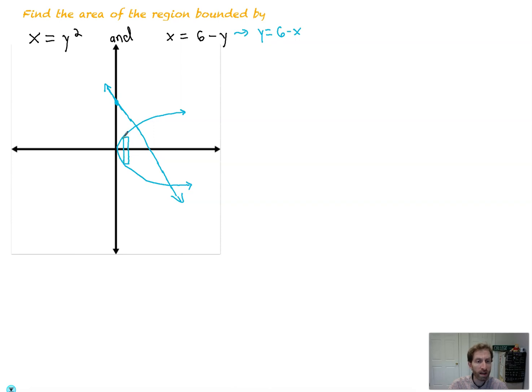But then when you get to this point, you'd have a top curve here and a bottom curve there. That's two different sets of top and bottom curves. Well, here's the thing. If we change our rectangle to be right to left, check this out.